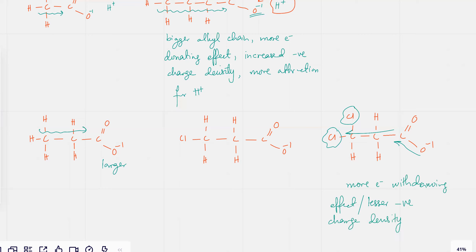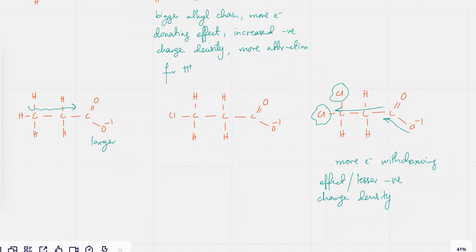And if there is lesser negative charge density, that means that the H⁺ is not attracted back — there's going to be weaker attraction for H⁺. So it's going to dissociate easily. It's going to be a stronger acid.